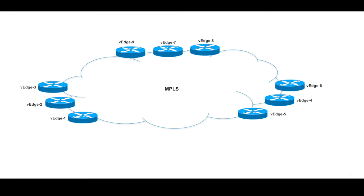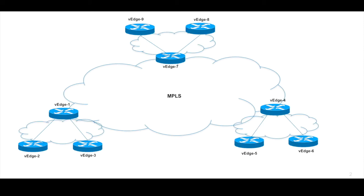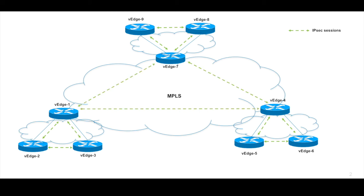Requirements could include certain services within a region needing to use the regional data center or hub. We will split the network into three regions, and within each region we will have full mesh connectivity between branches. To reach other regions, we will use the regional hub as our exit point. We will not only influence the traffic flow but also restrict the BFT IPsec sessions — for example, region 1 spokes will have BFT sessions only with devices within the same region, while hub devices will have a full mesh with their respective regions as well as with other hubs.